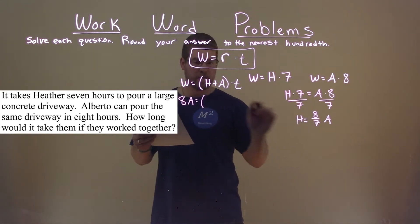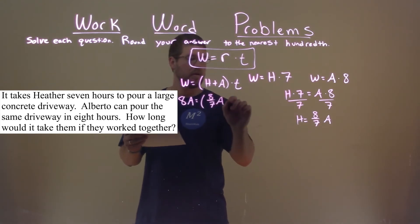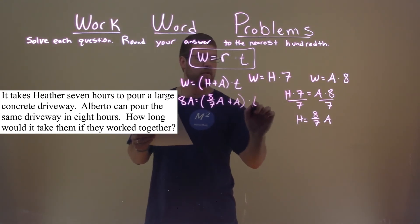Our H value we found to be eight-sevenths A. We add an A to that, and we still multiply that by time.